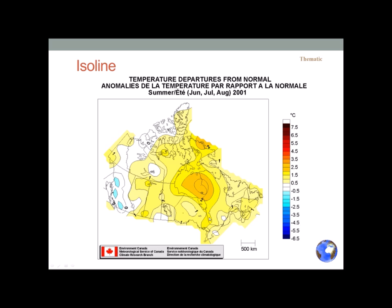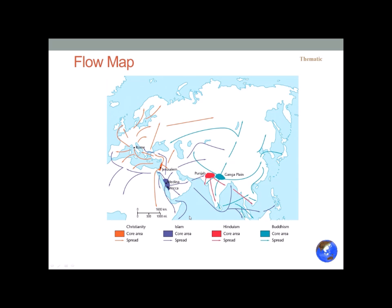An isoline map takes measurements — like temperatures — grids them off, and draws lines between areas of equal value. So an area of equal temperature departure is defined by those lines. USGS seven-and-a-half-minute quad sheets use this approach for topography. A flow map shows the cores of major religious traditions in the world, and from their core, arrows based on collected data show how that particular religious belief system dispersed across the planet into other areas.